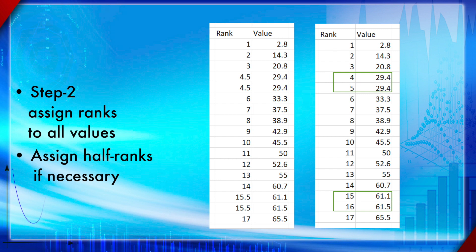Sometimes values share a rank — for example, two values sharing the fourth rank and two others sharing the sixteenth rank. In that case, you assign half ranks: if two values share ranks 4 and 5, the half rank is 4.5, calculated as (4 + 5) / 2. This concept of half ranks was already explained during the percentile calculation discussion.